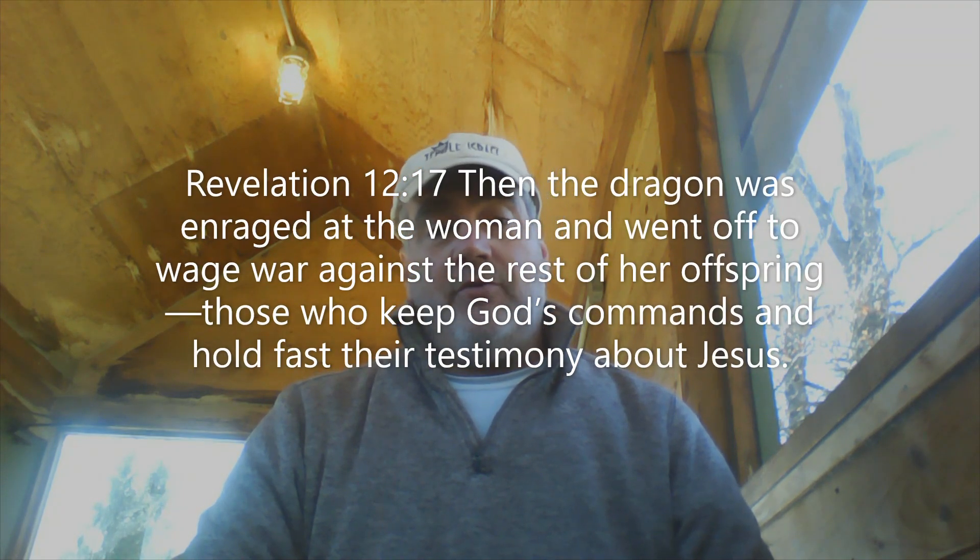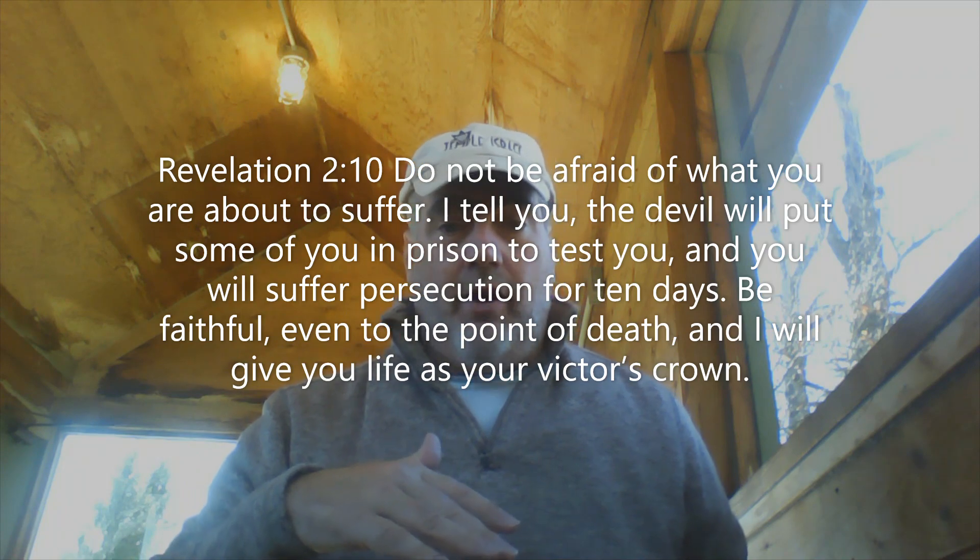From Revelation 12:17: when the dragon was enraged at the woman and went off to wage war against the rest of her offspring — those who kept God's commands and hold fast their testimony about Jesus. Revelation 12:17 should be the end of the seventh trumpet. He's then able to wage war against all the people who survived, who are keeping the faith, keeping Torah, following the Messiah, and behead them. From Revelation 2, the persecuted church: how long are they in jail? Ten days, and then he kills them. At that point in time, three years of the Great Tribulation have passed — heads are going to roll under Antichrist's martial law.